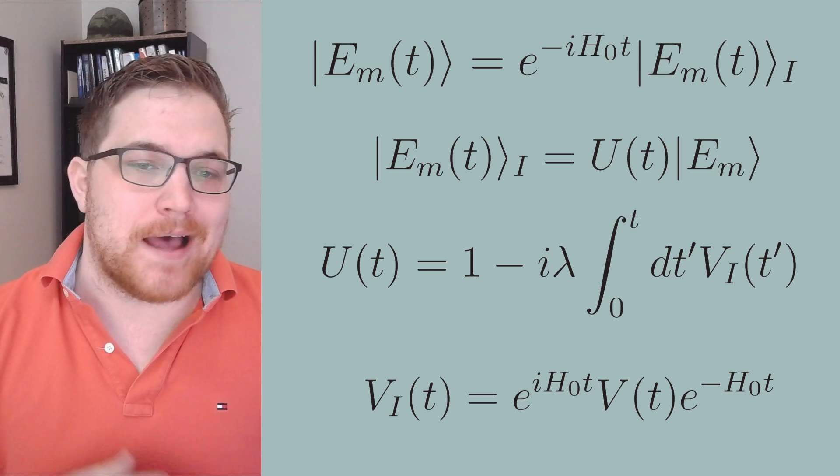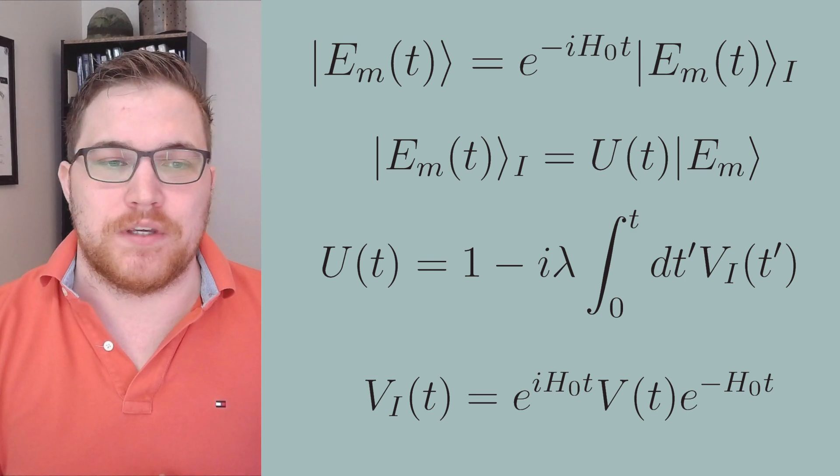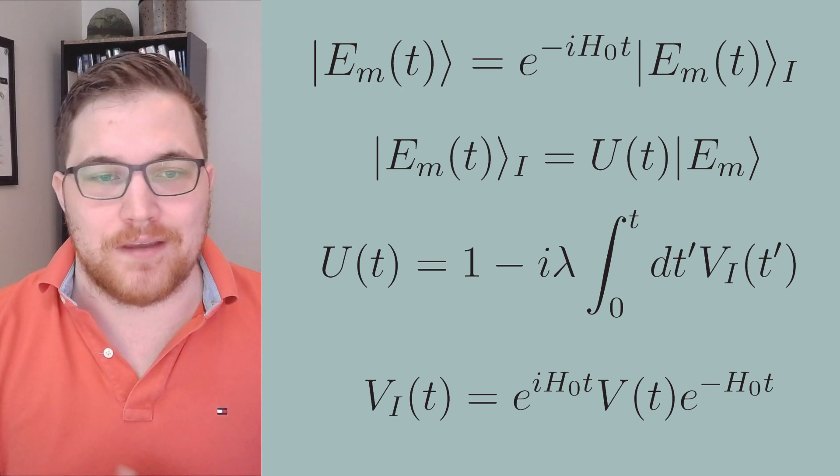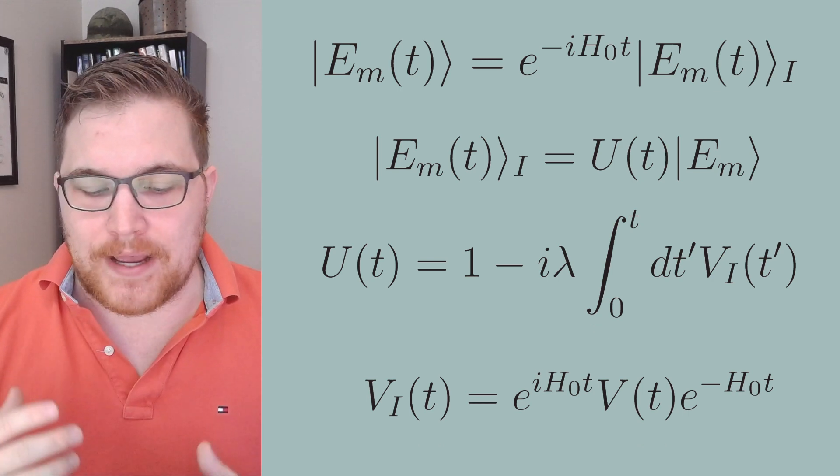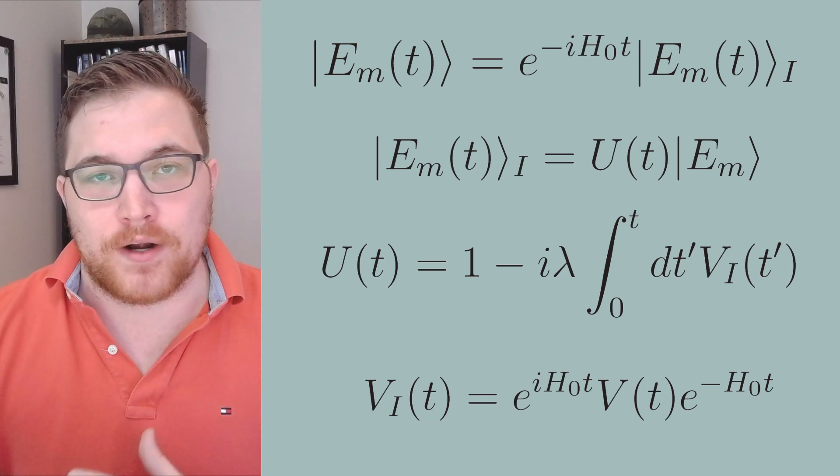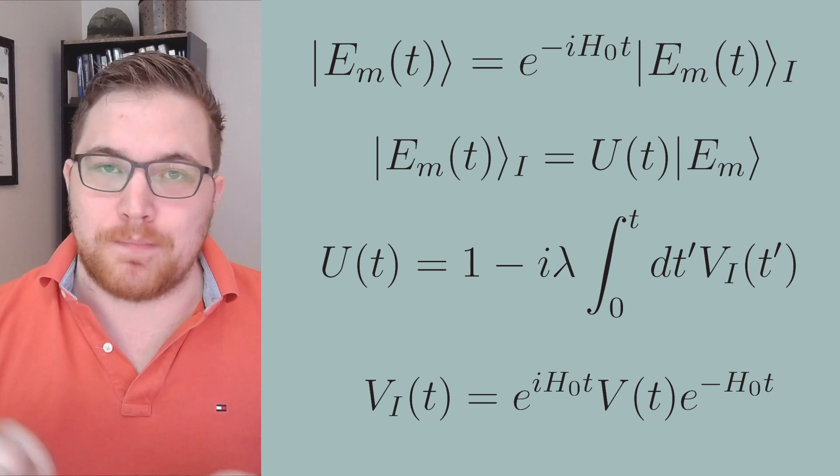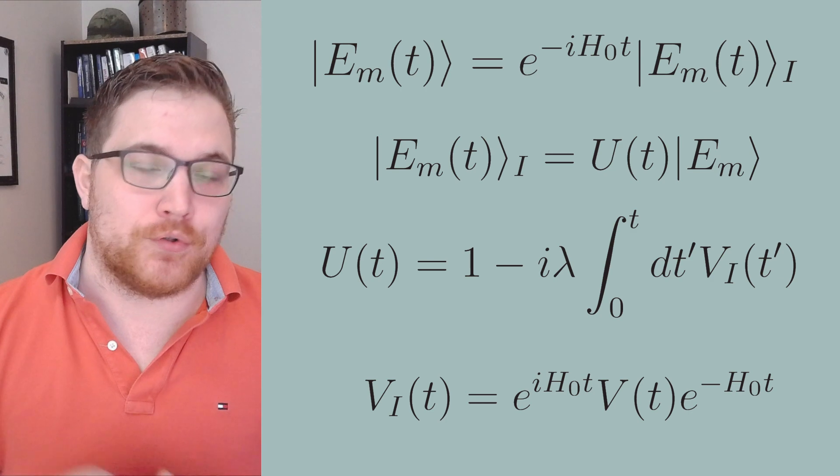The interaction picture observable here is in general written in terms of the Schrödinger picture observable as the following expression, where we still write v as a function of time because we assumed that that might be the case. But you'll notice that this is more or less just equivalent as evolving this operator in time with respect to the free Hamiltonian.